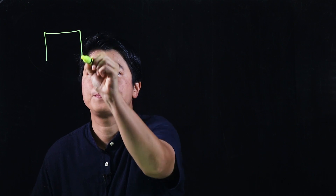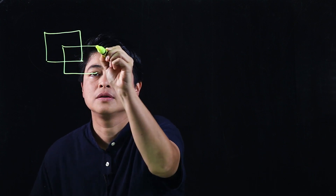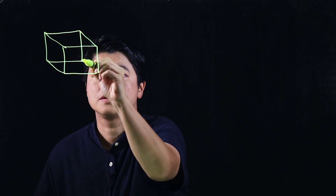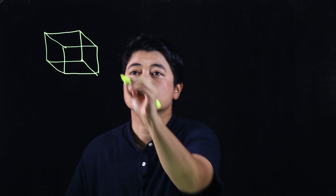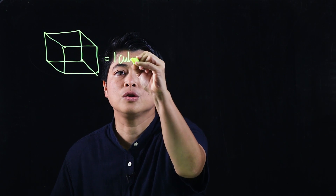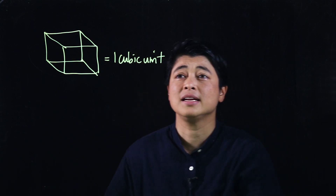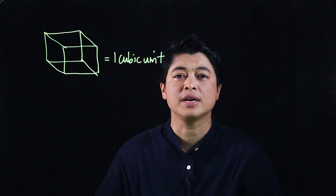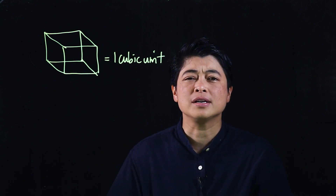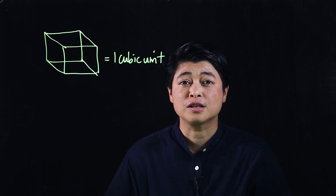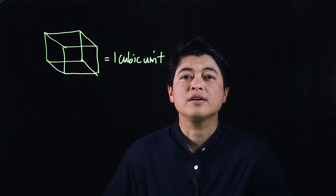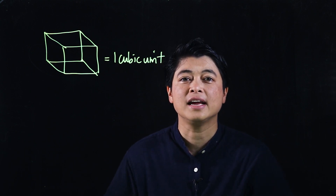We're moving away from two-dimensional drawings and going into three-dimensional drawings. A cube would look like that, and it is equivalent to one cubic unit. If there's no unit of measurement on the side, the generic term for it is a cubic unit. This first lesson pretty much requires kids to count the cubes.